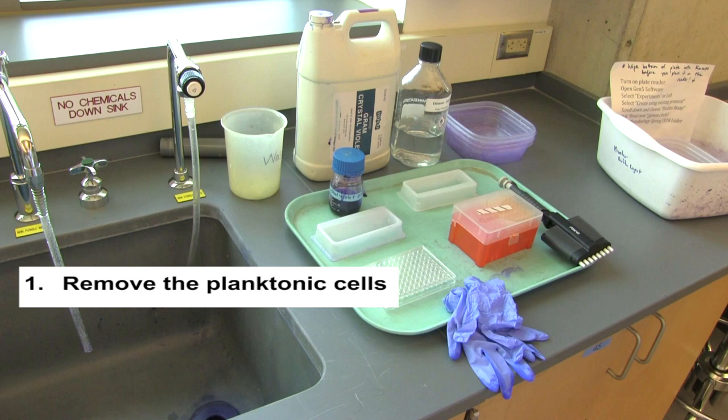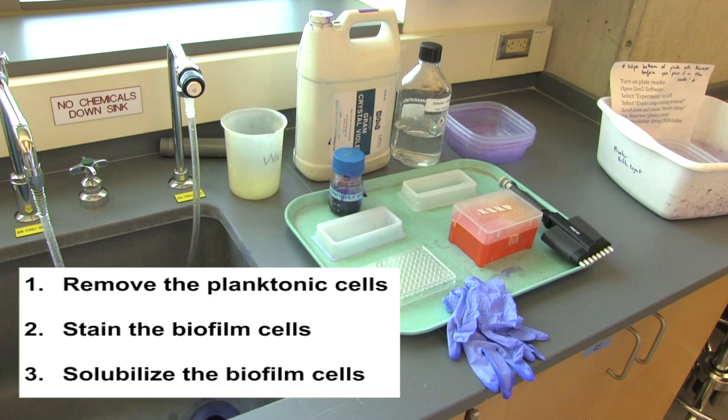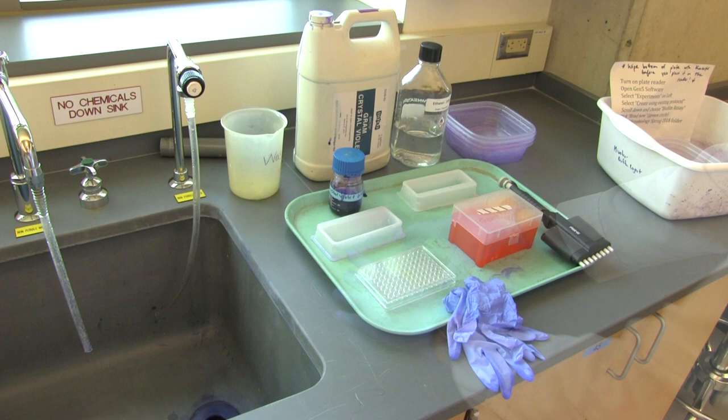First, removing the planktonic cells. These are the cells that are not a part of the biofilm. Second, staining the cells that remain in the biofilm. Third, solubilizing the cells so that we can accurately quantify the number of cells in each biofilm.